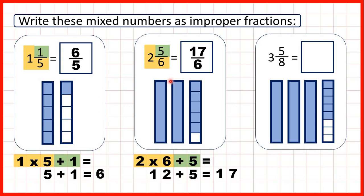And you can see why this works, because here we have 2 wholes. But if we change those 2 wholes into 6ths, then what was 2 wholes is now 12 sixths, and that's why we multiply 2 by 6 to get 12. Then we need to add the 5 sixths that we had in our question, and that gives us 17 sixths all together.